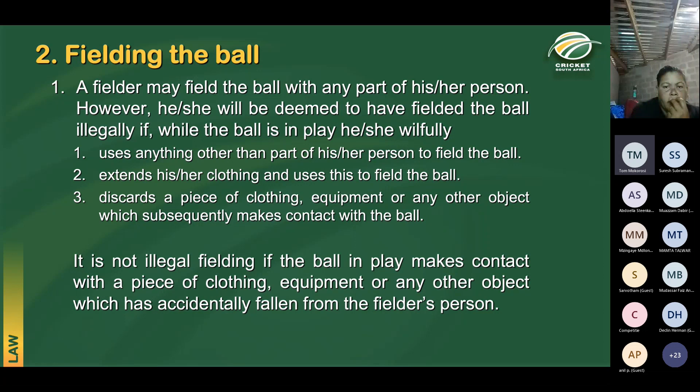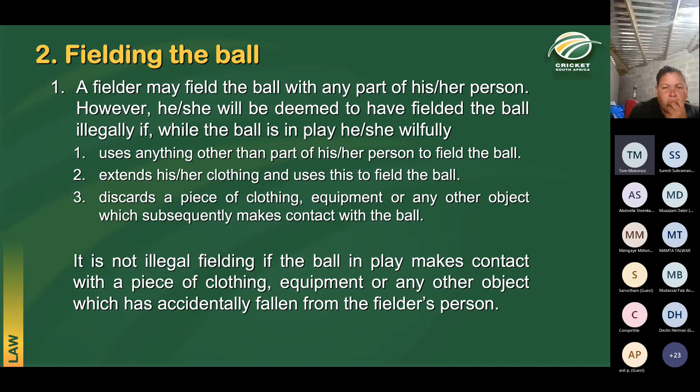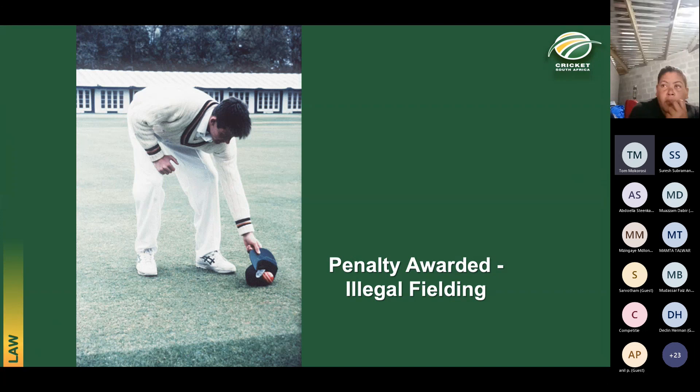The law states it is not illegal fielding if the ball in play makes contact with a piece of clothing, equipment, or any other object which has accidentally fallen from the fielder's person. Extending a fielder's clothing — as shown in the picture — is considered willful and therefore illegal fielding.